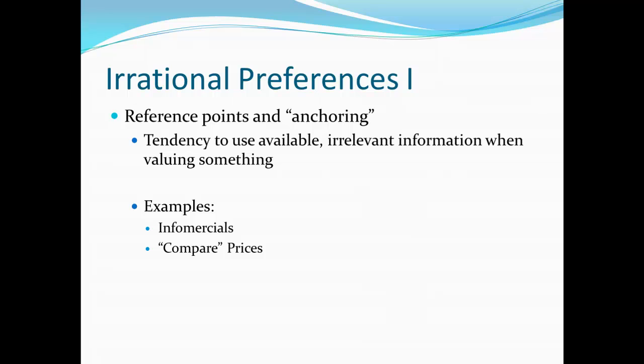A second example is when you go shopping in certain stores and they love to put compare prices on things. At DSW shoe store, every single box has a compare price and the DSW price. The compare price is going to be higher than the DSW price, but not by a whole lot. The problem is there's no evidence that anyone anywhere has ever paid that compare price — it's just a totally irrelevant number the store is feeding to us, but it changes our valuation of the good. Because our valuation gets anchored by that compare price, the DSW price looks much better.